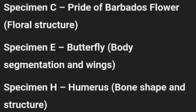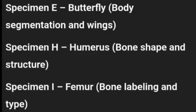Now, learn these diagrams: learn how to draw a bean seed and its longitudinal section, the floral structure of Pride of Barbados, the body parts of a butterfly showing segmentation and wings, the bone shape and structure for humerus and labelled parts, and also the structure of the femur.